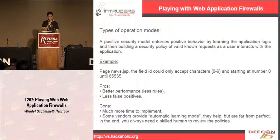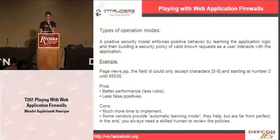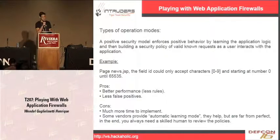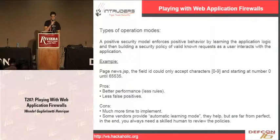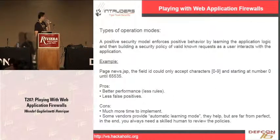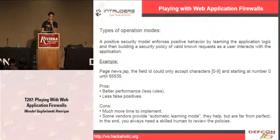The positive security model is basically a kind of enforcement of the application logic. For example, if you have a script called news.jsp and it has a field called ID that only accepts numbers from zero to 65535, they construct a kind of rule that only allows this kind of data, this specific digit range, and no other data will be accepted or processed.